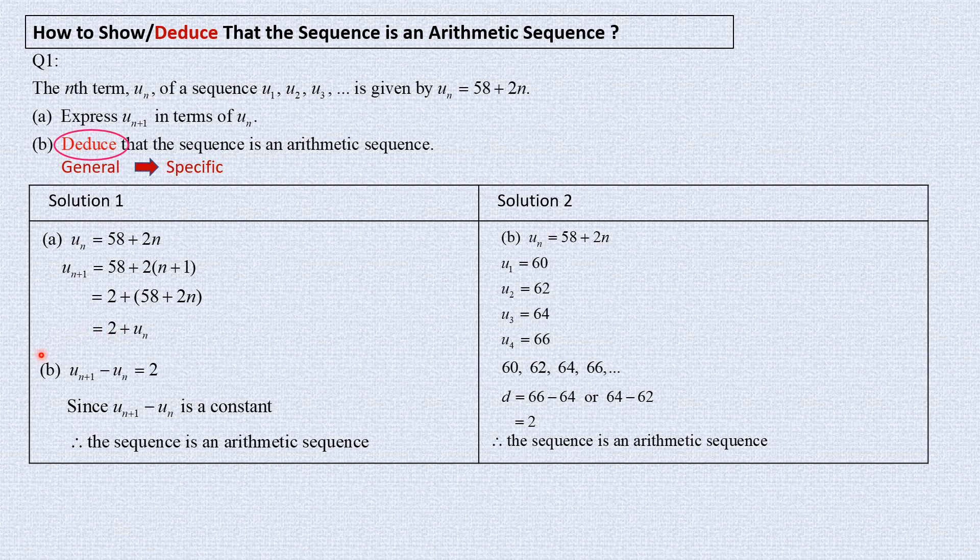In solution 1, from the general conclusion, it gives us these particular cases. So, we can make a conclusion that it has the common difference. But in solution 2, you just pick up a few cases and try to make the conclusion that it has the common difference. So, don't follow solution 2.